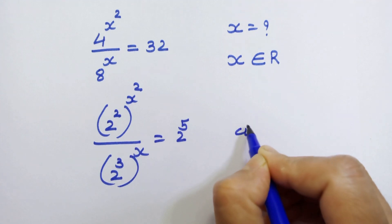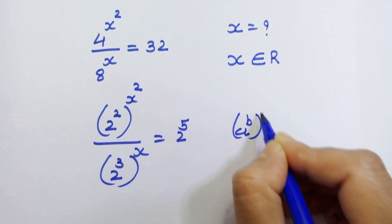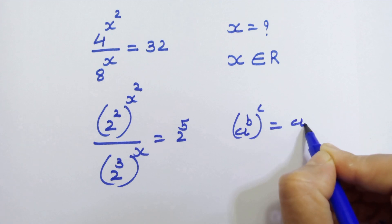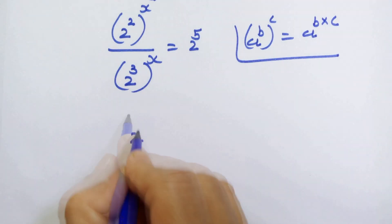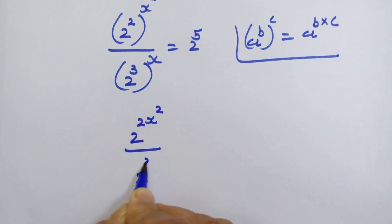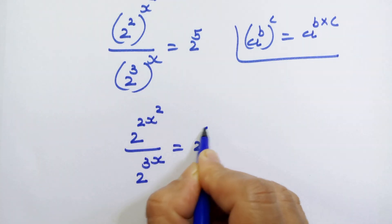We all know this rule. If a raised to b whole raised to c then we can write like this a raised to b into c. In this manner here we can write 2 raised to 2x square upon 2 raised to 3x is equal to 2 raised to 5.